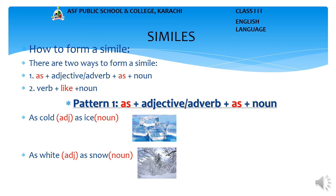Example No. 1: As cold as ice. In this phrase, cold is an adjective and ice is a noun. This simile uses the word 'as' and compares the word cold and ice. Example No. 2: As white as snow. In this example, white is an adjective and snow is a noun. This simile uses the word 'as' and compares the word white and snow.